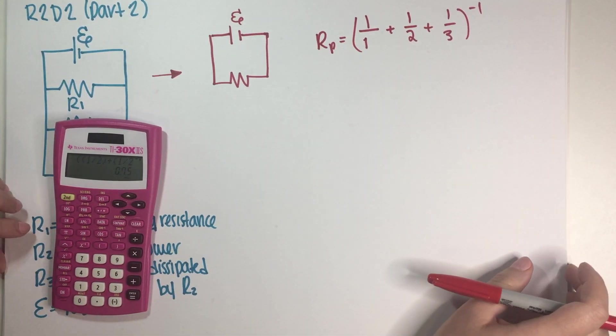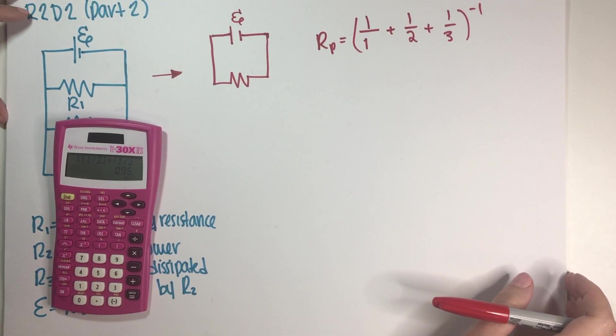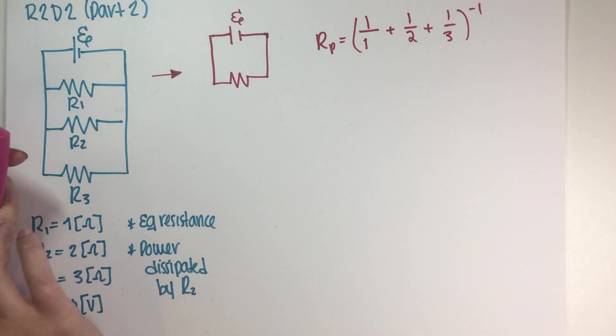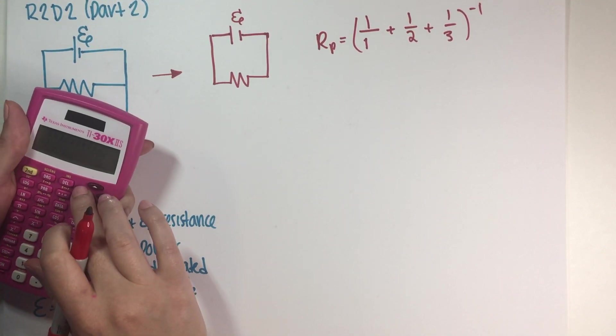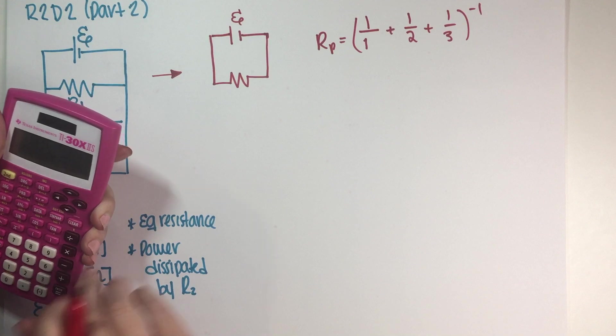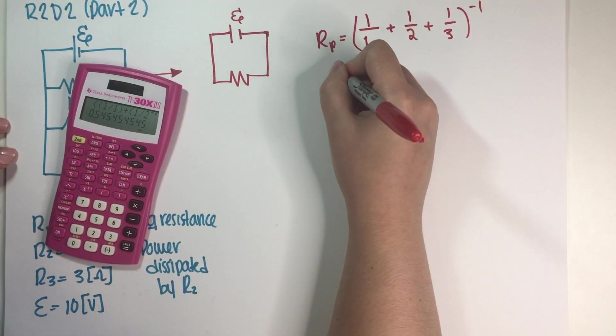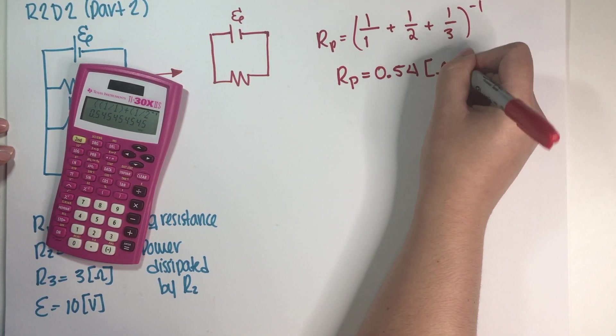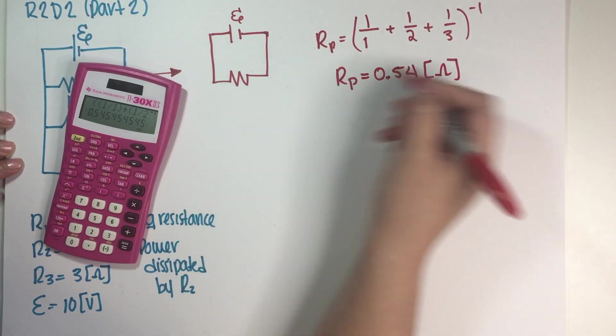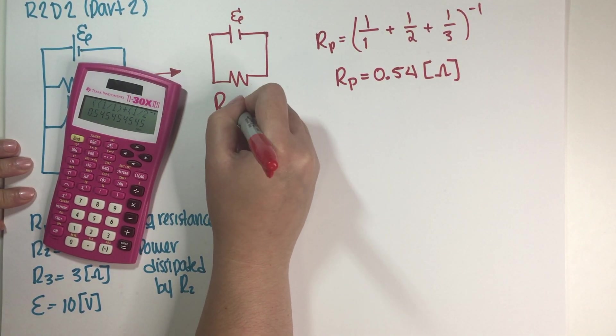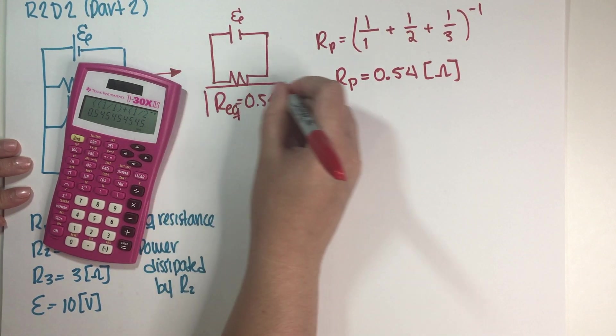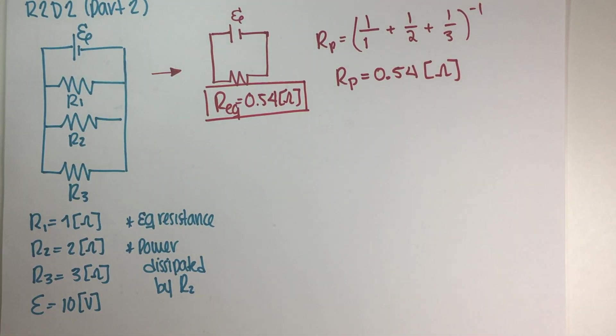So this is 0.54 ohms, final answer. So now the next thing that I have to do is figure out the power dissipated by this resistor.